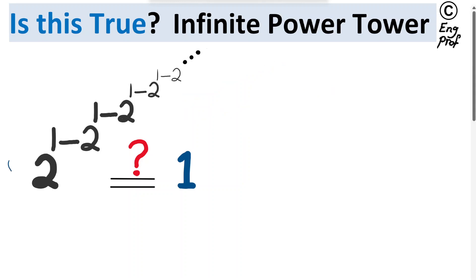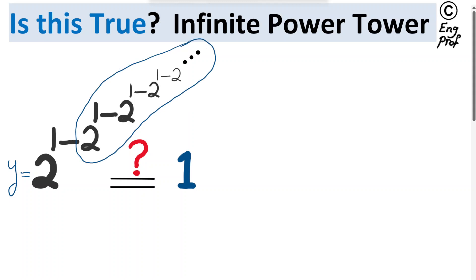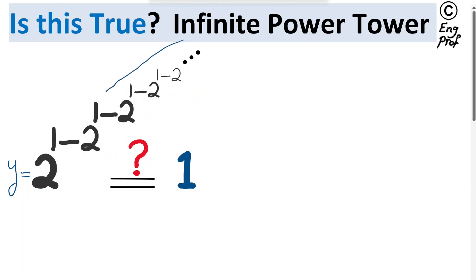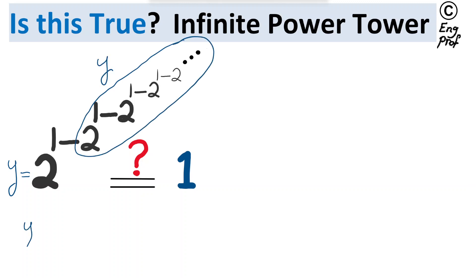A quick way would be: if you refer to this whole thing as unknown y, we can see that the y's keep repeating. It appears again in the exponent because of the ellipses indicating that this whole infinite exponentiation keeps going on forever. So I can refer to this whole thing in the exponent as y as well. Effectively, I can rewrite this as y equals 2 to the power (1 minus y).